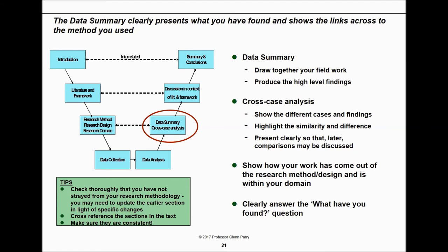The data summary clearly presents what you found — showing graphs, providing evidence from interviews, or describing what you observed. You may do comparisons at this point. Show your working and how you got there. Clearly answer the 'what have you done' question. Check thoroughly that you haven't strayed from your methodology in light of changes or new findings. Cross-reference the sections in the text and make sure you have consistency throughout — don't contradict yourself.